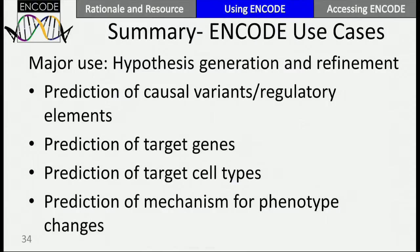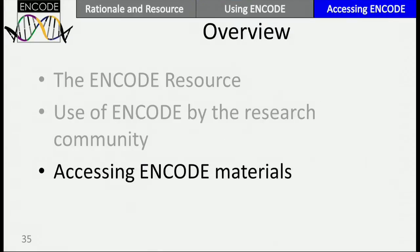In summary, the major use cases for ENCODE in disease are: hypothesis generation and refinement, prediction of causal variants, prediction of target genes, prediction of pathogenic cell types, and making inferences about the mechanism of disease action.